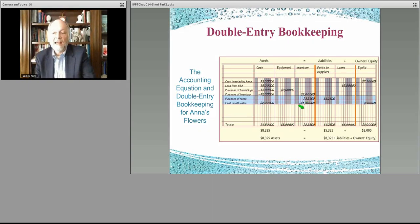So you can see all along this equation, the fundamental equation of accounting is matched. $8,325 is in the cash account. And that's equal to $5,325 of liabilities and $3,000 of equity. Assets are equal to liabilities plus equity.